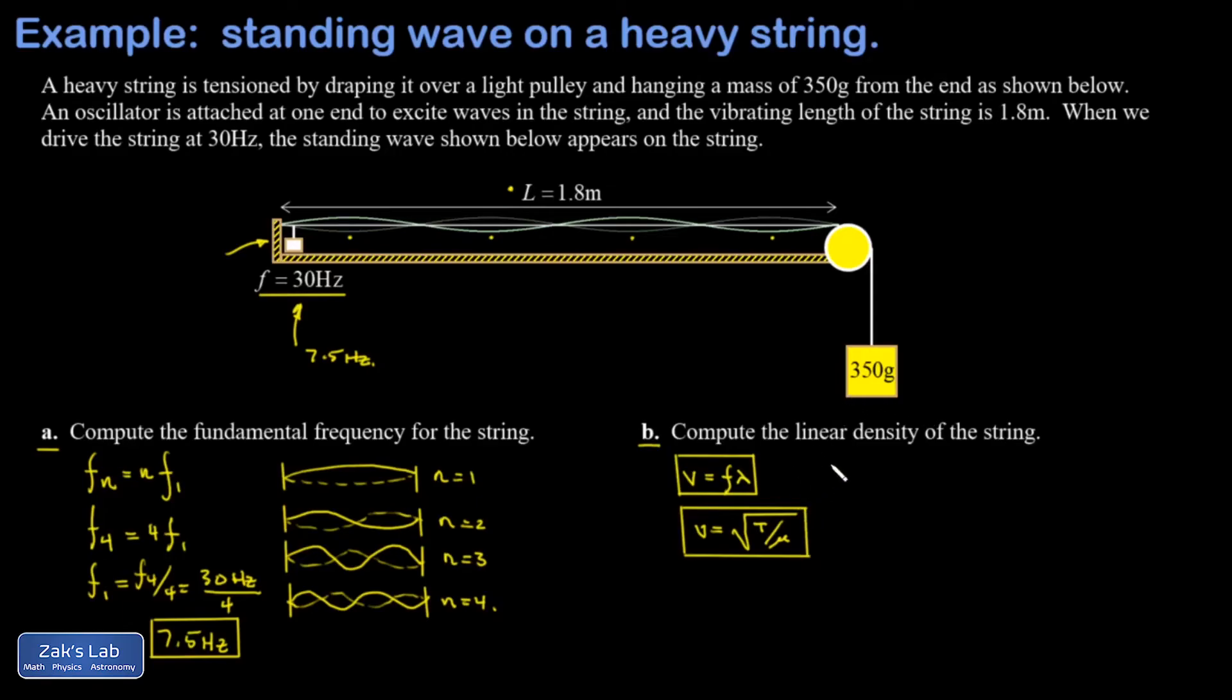Now linear density is kind of a strange quantity. Its units are kilograms per meter, and this is just a way of talking about how heavy a string or a rope is.